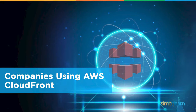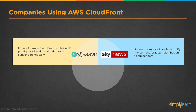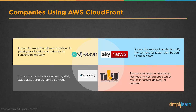Companies using AWS CloudFront include: GeoSeven, a popular app that uses Amazon CloudFront to deliver 15 petabytes of audio and video to its subscribers globally; Sky News, which uses the service to unify content for faster distribution to subscribers; Discovery Communications, which uses CloudFront for delivering API, static assets, and dynamic content; and TV1 EU Streaming Europe, which uses CloudFront to improve latency and performance, resulting in the fastest delivery of content.